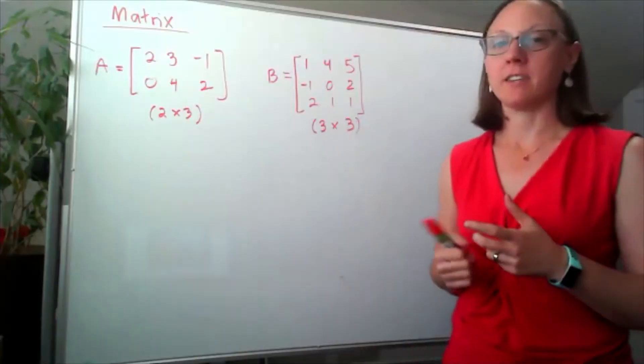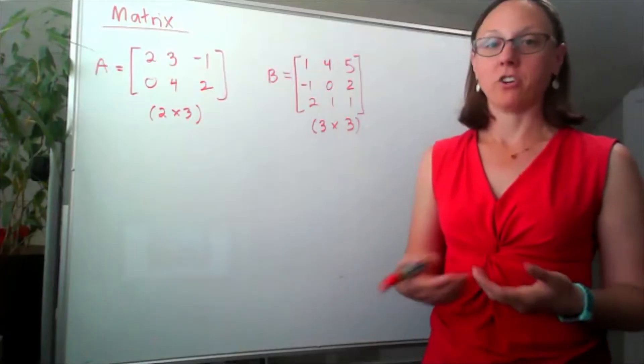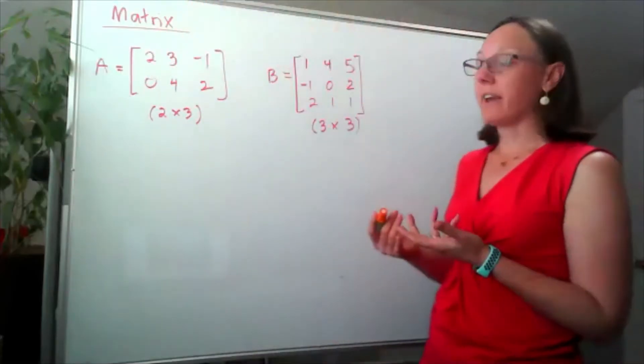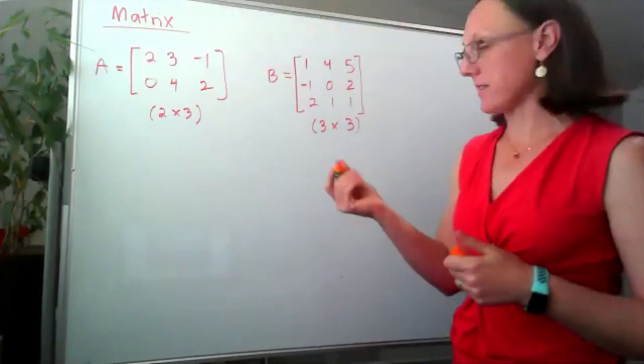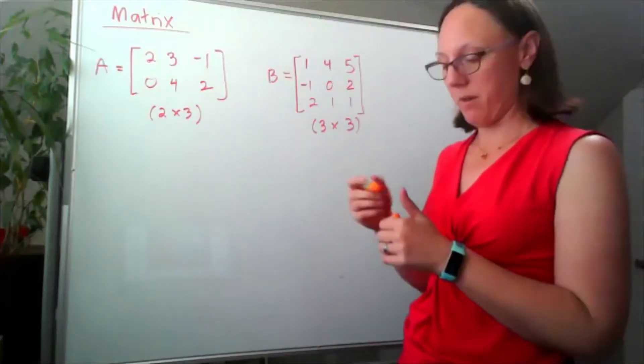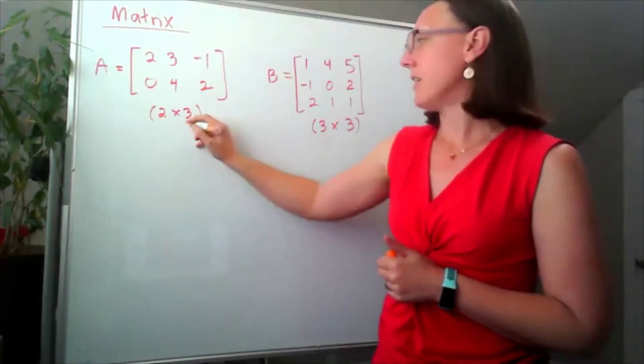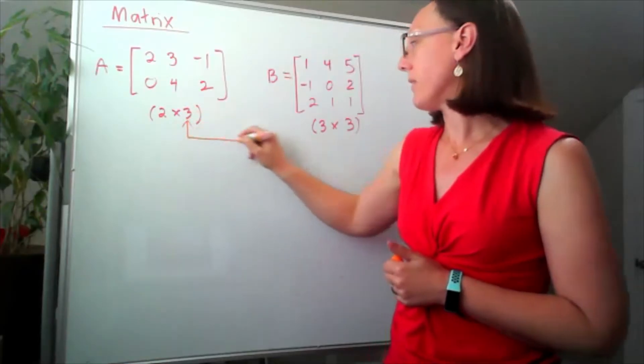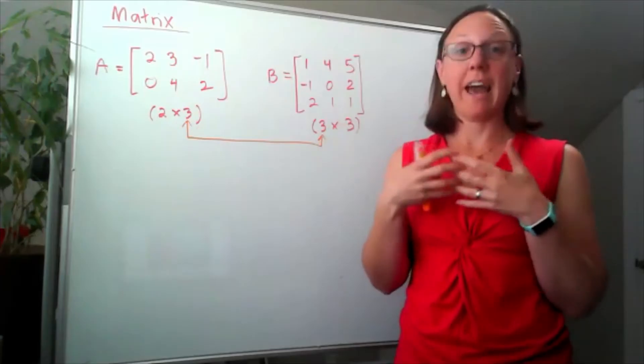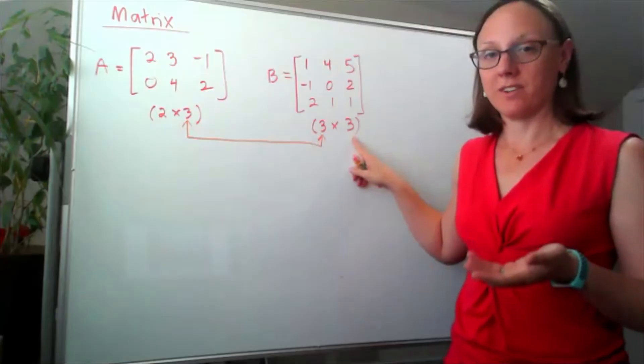When we multiply matrices, the dimensions are a little bit more complicated in terms of how they have to match up. So when I'm checking if I can multiply two matrices, if I line them up in the order that I want to multiply them in and I write out the dimensions, these two inner dimensions have to match, and the outer dimensions tell me how large the result will be.